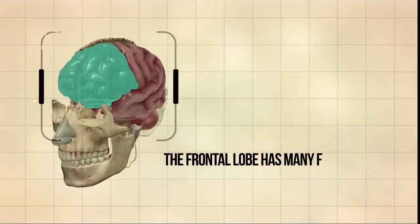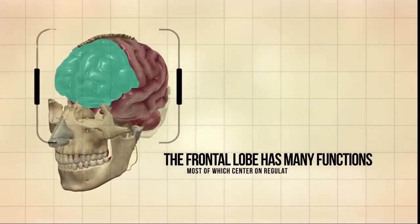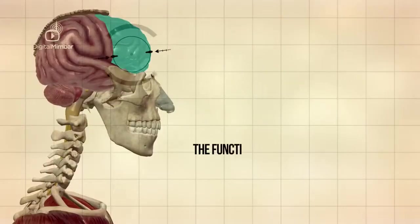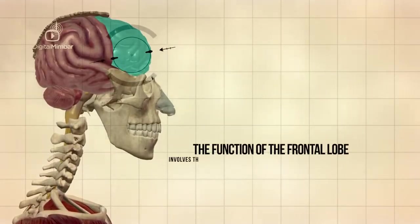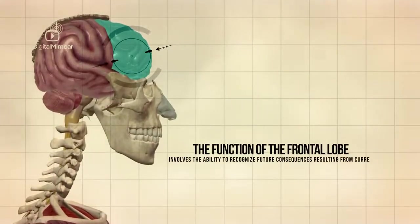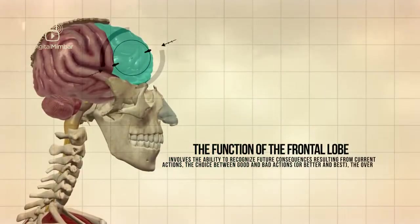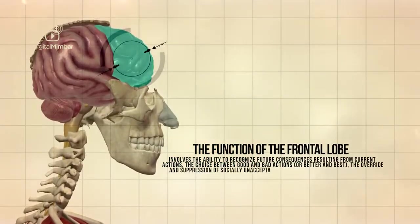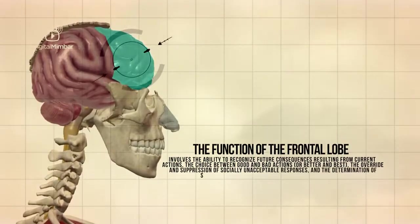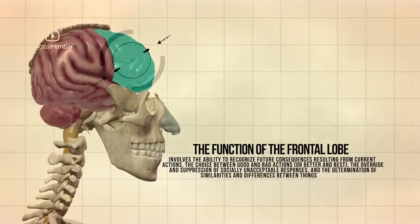The frontal lobe has many functions, most which center on regulating social behavior. The function of the frontal lobe involves the ability to recognize future consequences resulting from current actions, the choice between good and bad actions or better and best, the override and suppression of socially unacceptable responses, and the determination of similarities and differences between things or events.